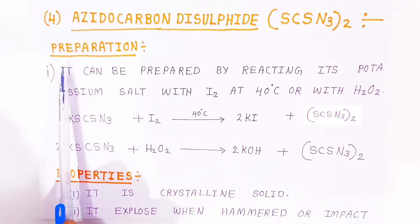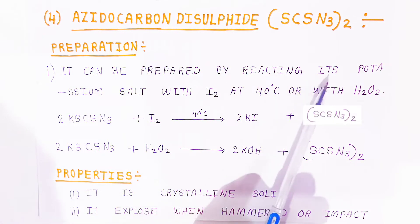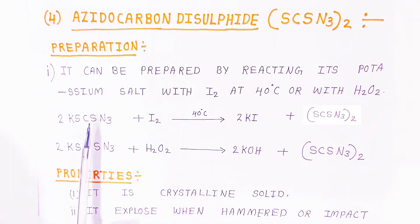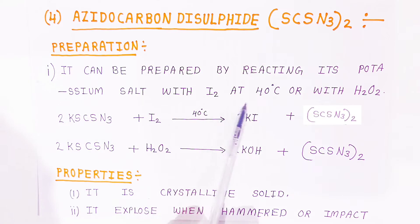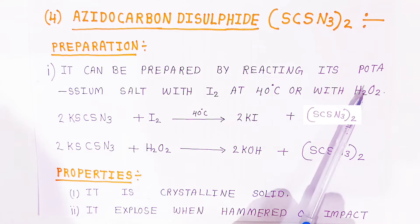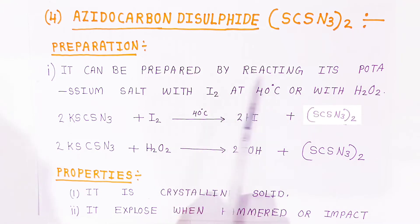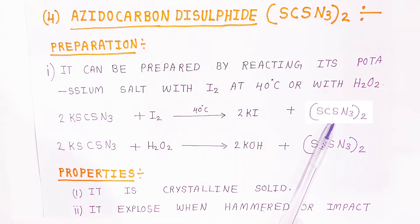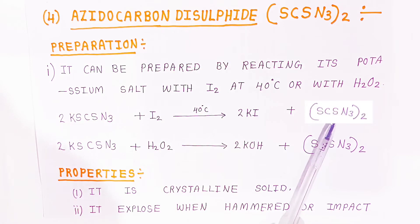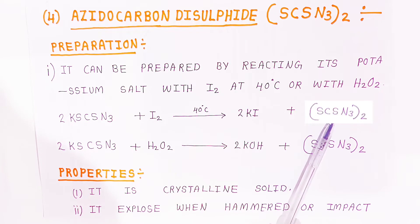How do you prepare azido carbon disulfide? First preparation: it can be prepared by reacting the potassium salt of azido carbon disulfide with iodine at 40°C in the presence of H₂O₂ (hydrogen peroxide). You will get potassium iodide and azido carbon disulfide — N₃CS₂ — because of the three nitrogens.